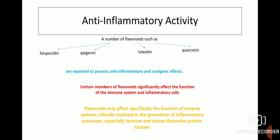Regarding the anti-inflammatory activity of flavonoids, a number of flavonoids such as hesperidin, apigenin, luteolin and quercetin are reported to possess anti-inflammatory and analgesic effects. Certain members of flavonoids significantly affect the function of the immune system and inflammatory cells. Flavonoids may specifically affect the function of enzyme systems critically involved in the generation of inflammatory processes, especially fatty acid, tyrosine and serine-threonine protein kinases.